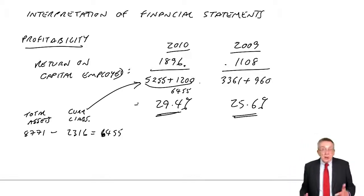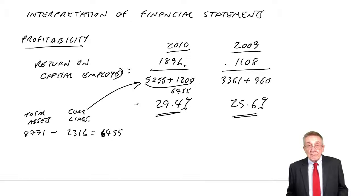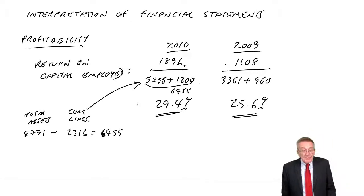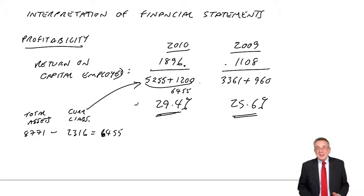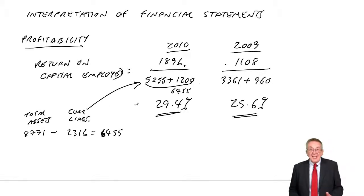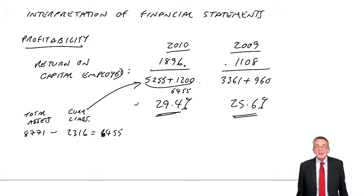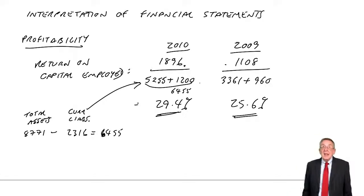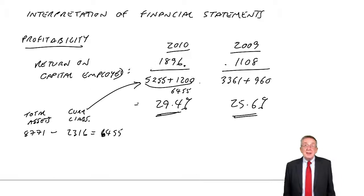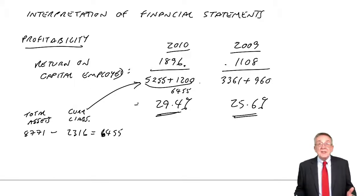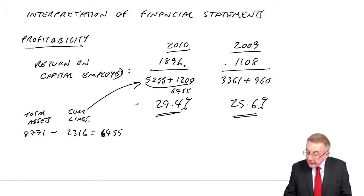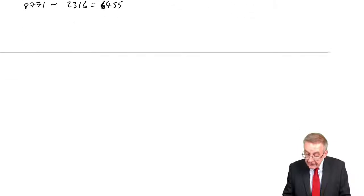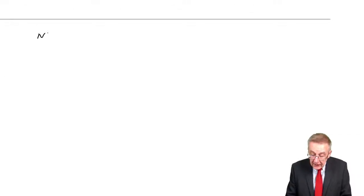Any company wants to increase return on capital employed, but there are actually two ways you can increase it. One way would be to sell everything at a bigger profit — if you make the same sales but you're making more profit on all of them, this would go up. The other way is to be more efficient and, for the same size business, to actually be able to sell more. We can look at those two bits separately. The next one is the net profit margin.